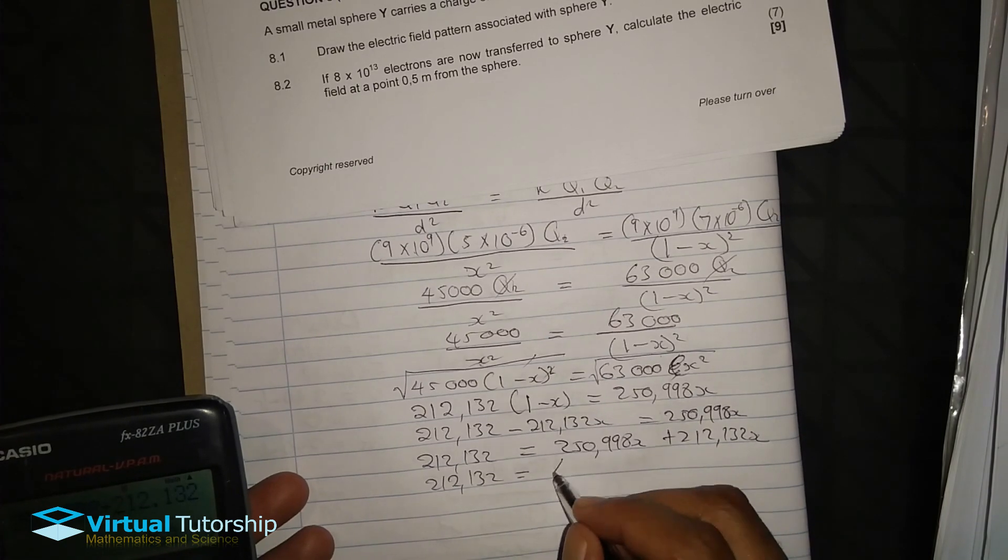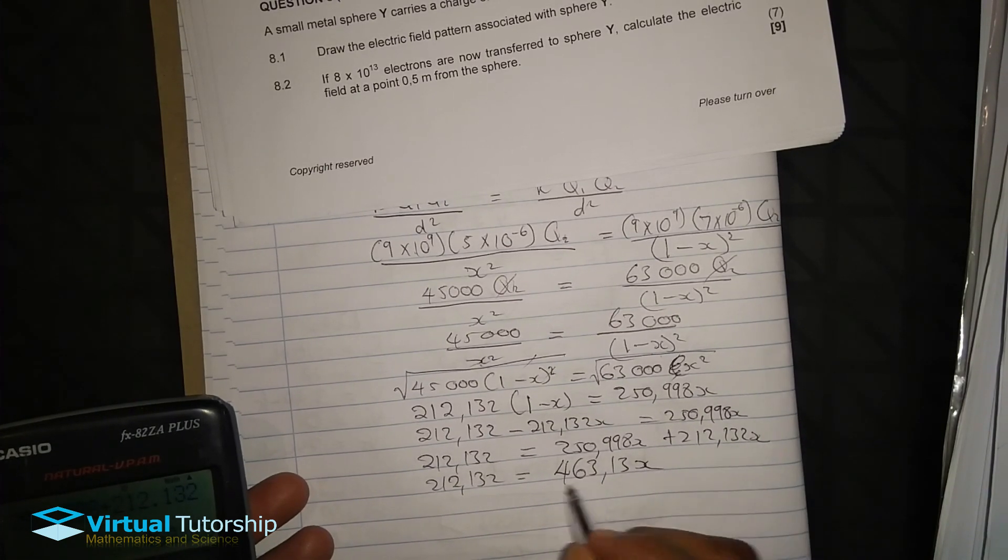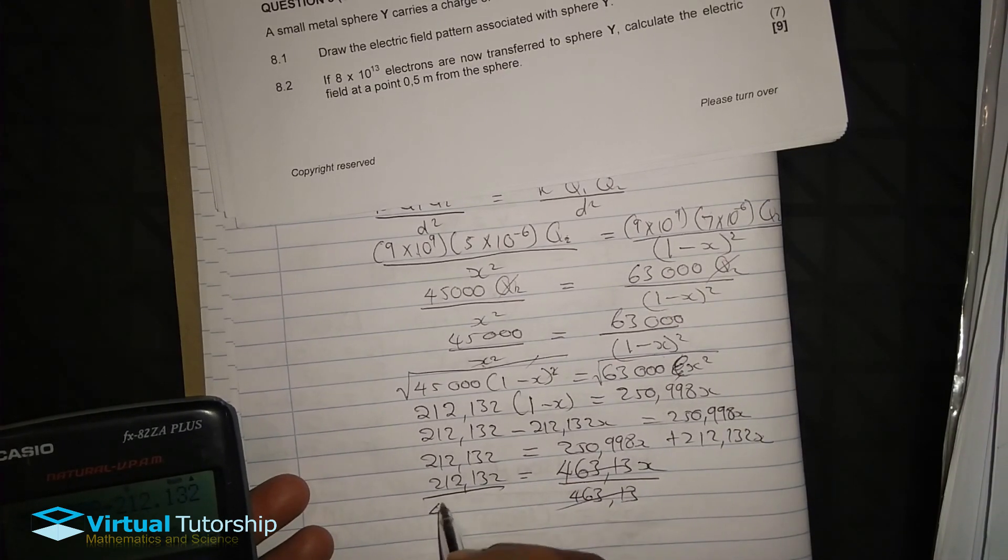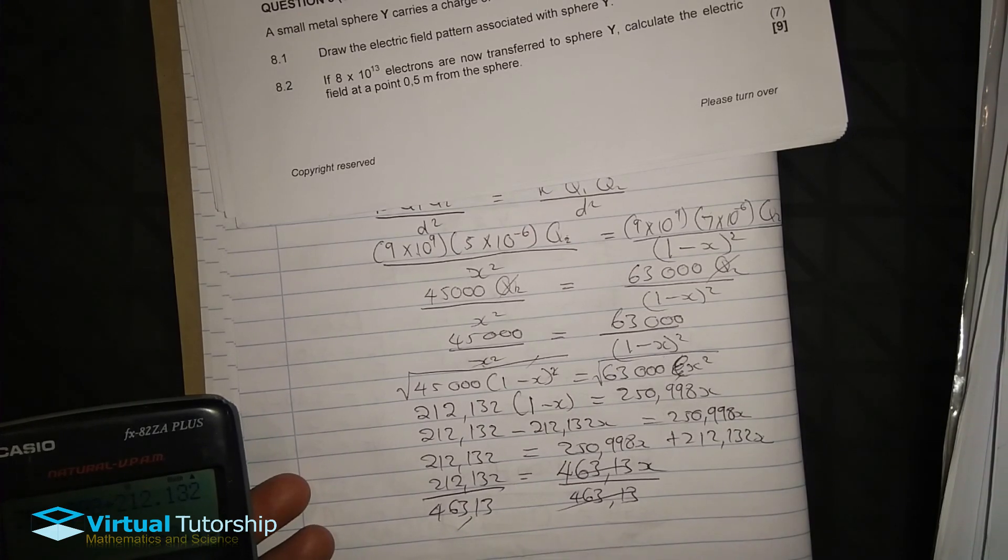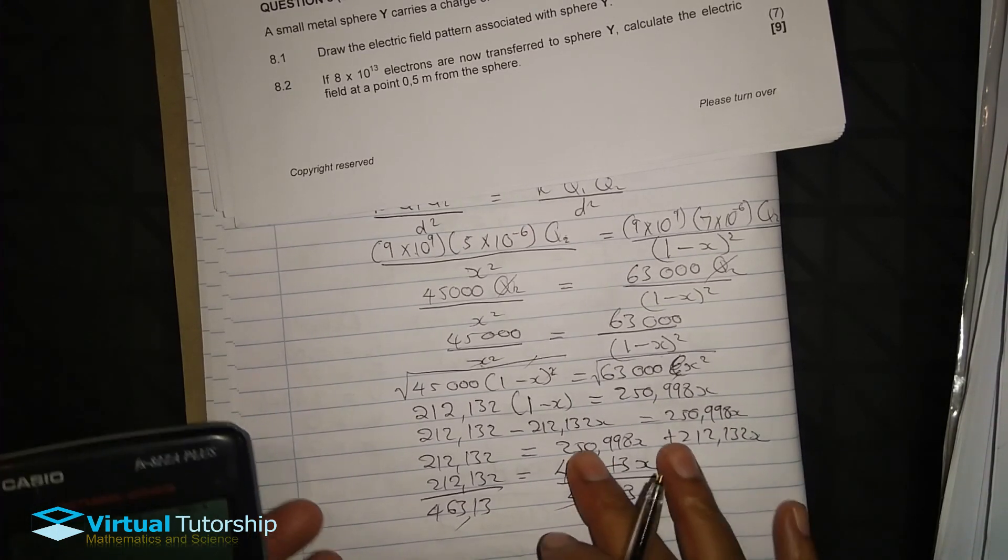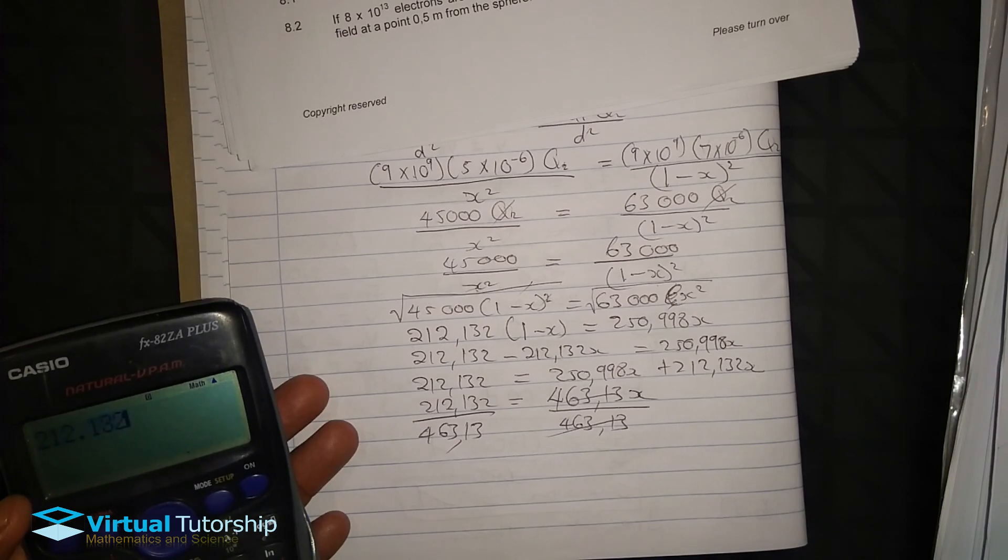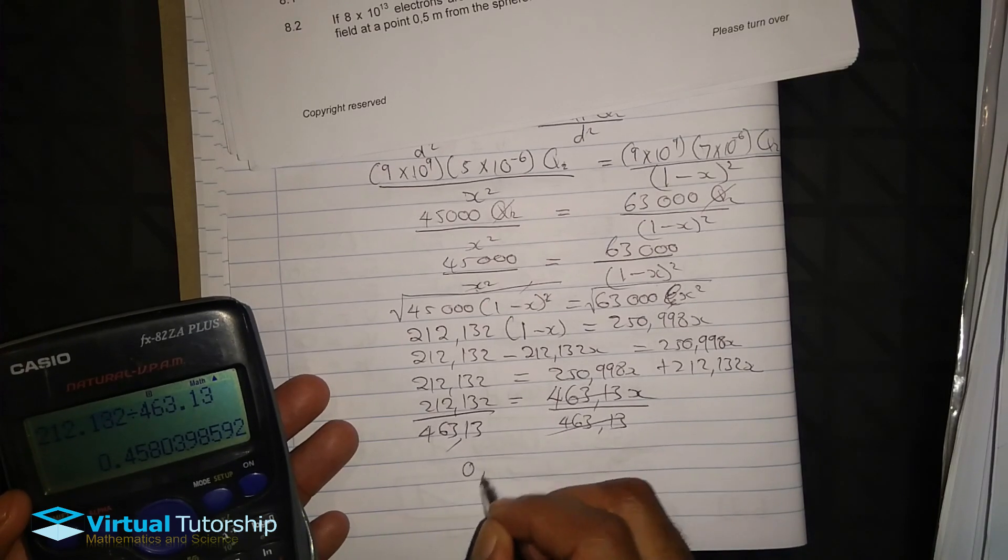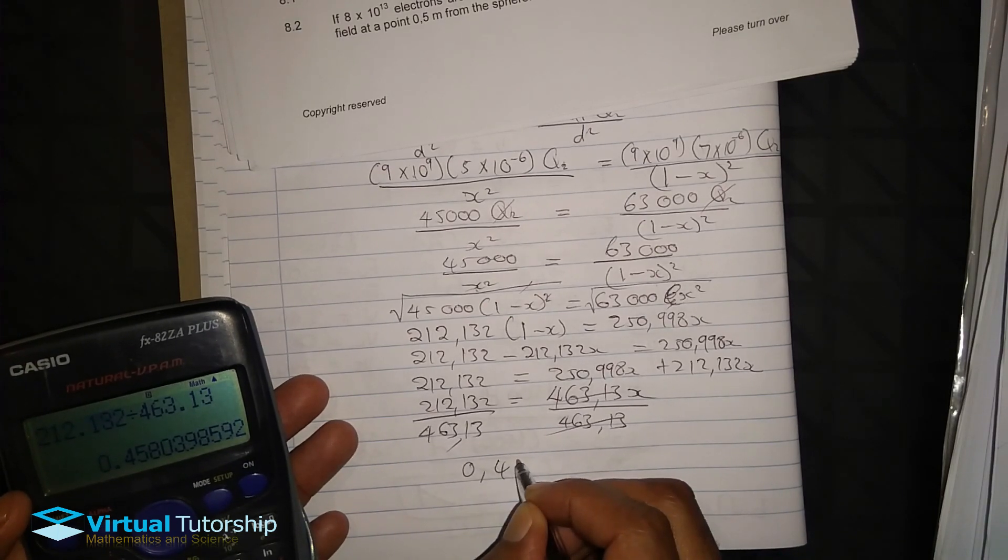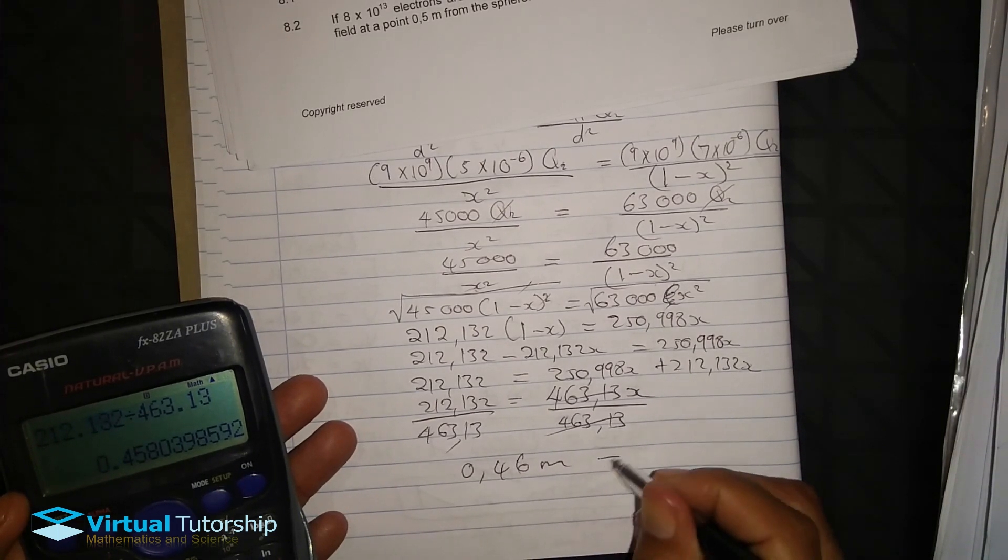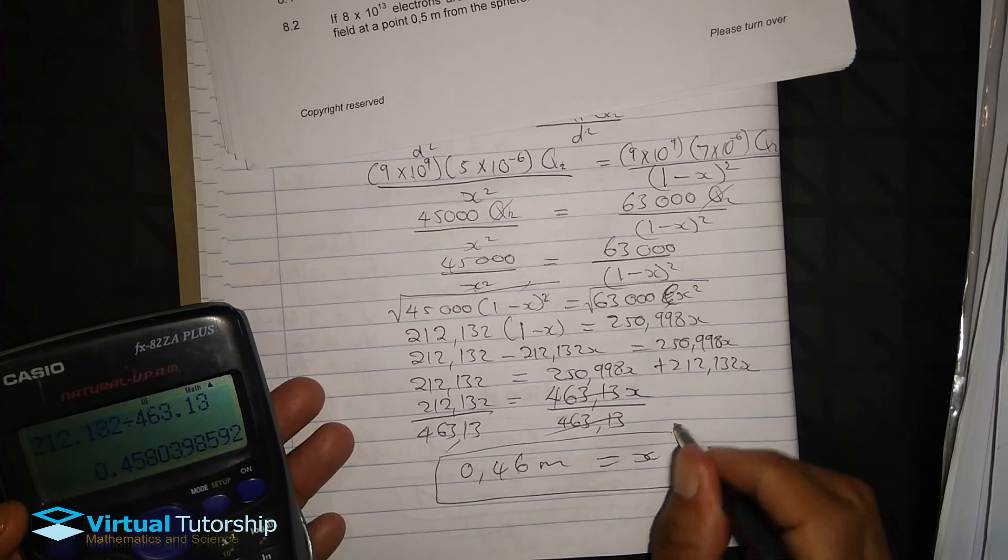Divide 212.132 divided by 463.13. The answer here to two decimal places is 0.46 meters. 0.46 meters is equal to our value of X.